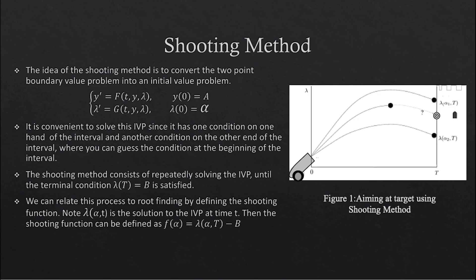To perform this shooting method, our first step will be converting our boundary value problem into an equivalent initial value problem. We convert it by replacing the terminal condition with an initial condition. The answer is simple: because there are many standard ways of solving initial value problems, making solving boundary value problems simpler. You can see the difference from the previous slide is that now we have two initial conditions instead of one initial condition and one terminal. But there is a drawback: one of our conditions will become unknown, meaning we will have to guess the missing condition to satisfy the terminal condition.